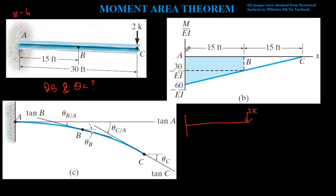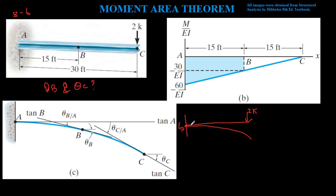Before we even draw the moment diagram, we try to visualize how the beam will deform — what we call the elastic curve. If we put a force here, the beam looks like this in an exaggerated shape. It has a linear curve because this is a fixed support, and there's a moment going this way to counteract the moment being created from the applied force.